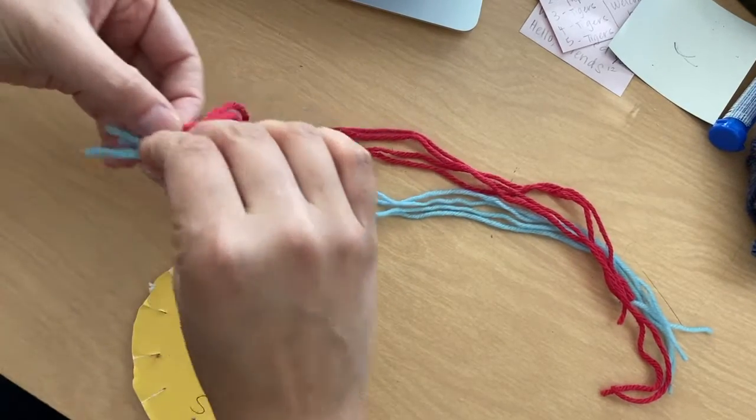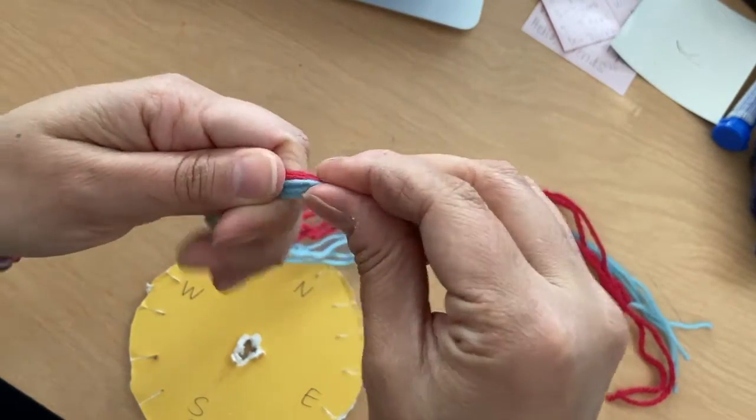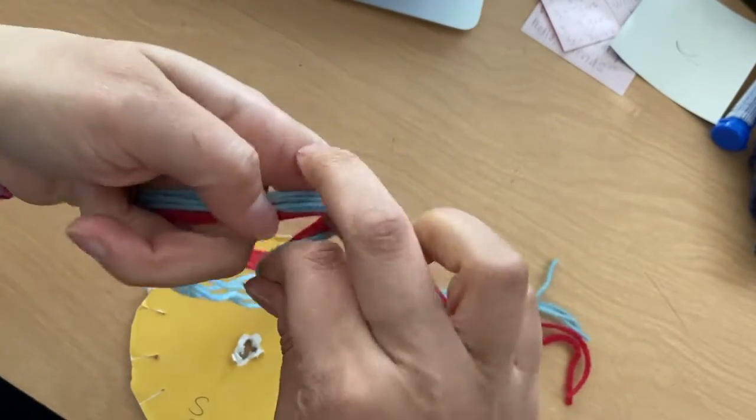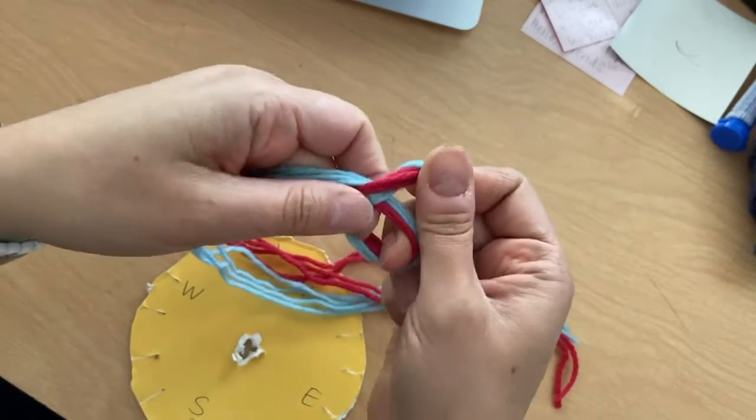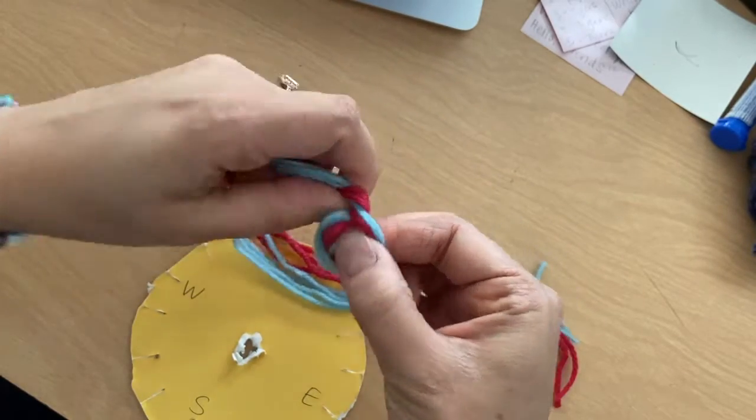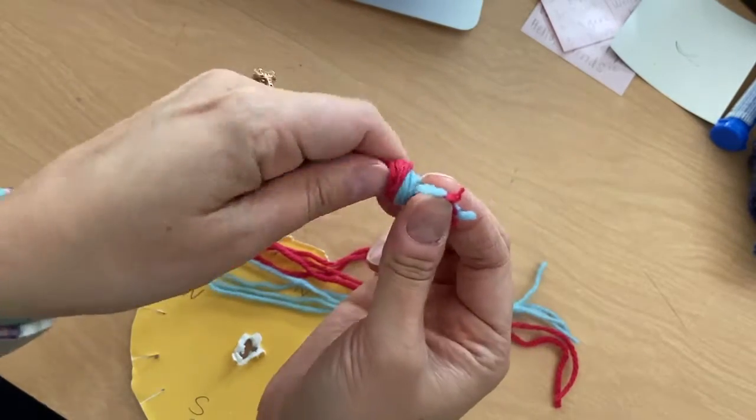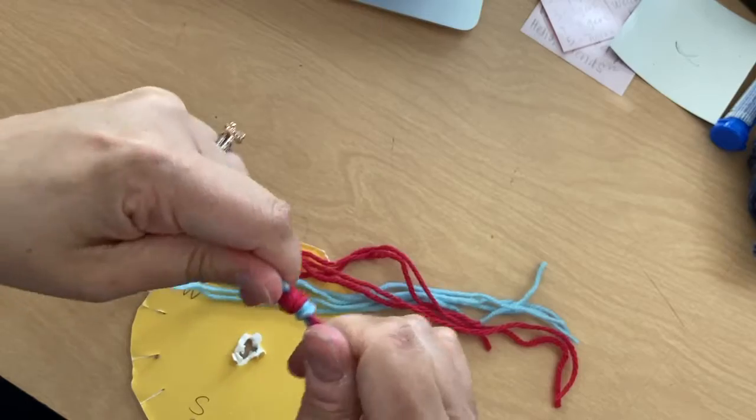I'm going to line up the ends, all of them together, and I'm going to tie a knot. So I'm going to kind of wrap it around my finger to make a loop, push those ends up and through that loop, and pull it. So I'm just making a knot.